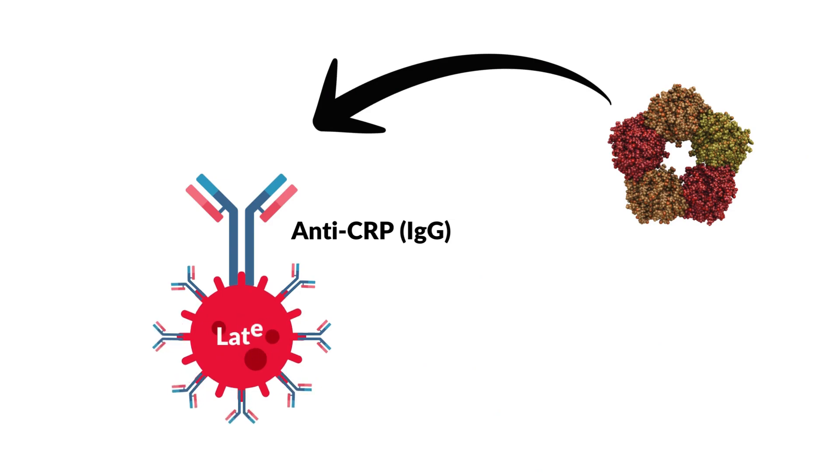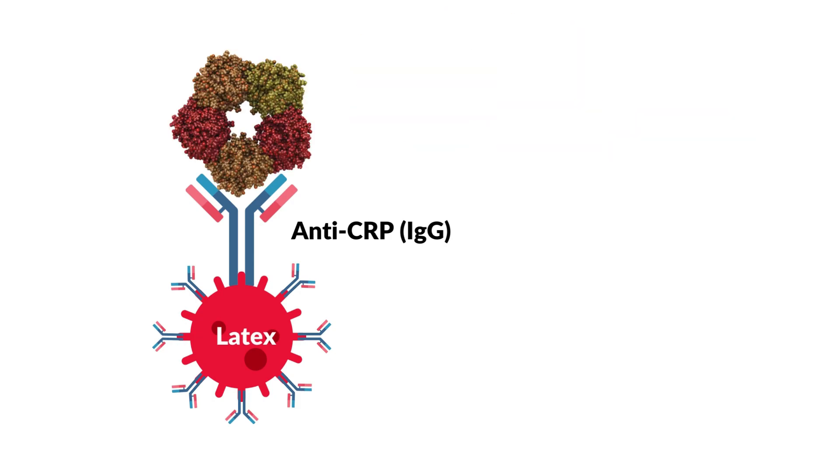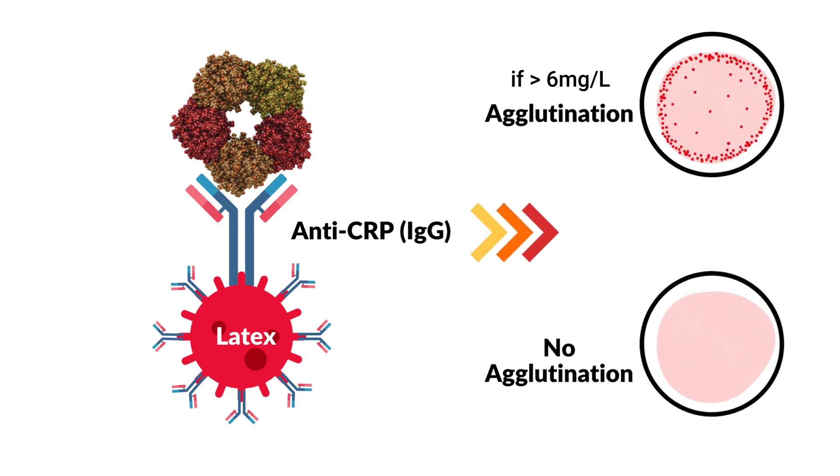Latex particles coated with goat IgG anti-human CRP are agglutinated when mixed with samples containing CRP. If CRP concentration is greater than 6 mg per liter, a visible agglutination is observed.